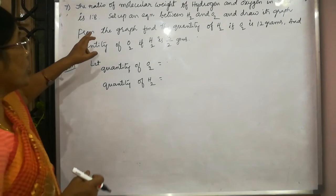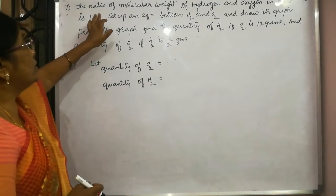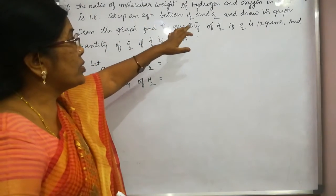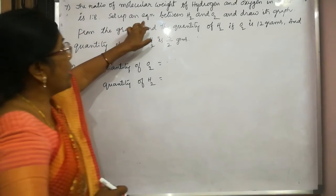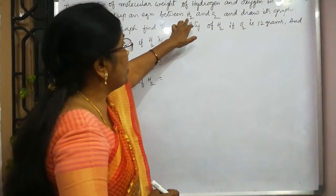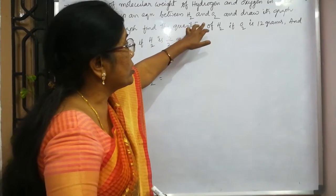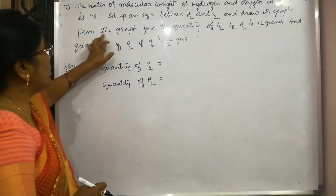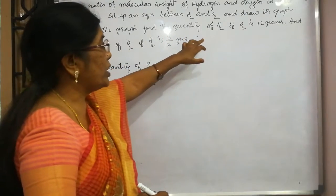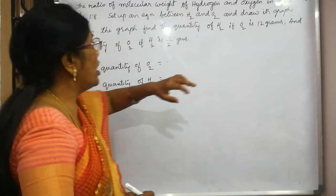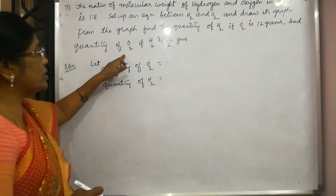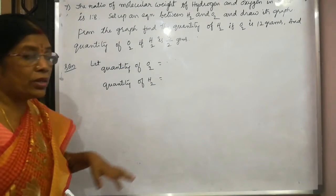This is the seventh problem of your exercise. The ratio of molecular weight of hydrogen and oxygen in water is 1 to 8. Set up an equation between hydrogen and oxygen and draw its graph. From the graph, find the quantity of hydrogen if oxygen is 12 grams and quantity of oxygen if hydrogen is 3/2 grams.